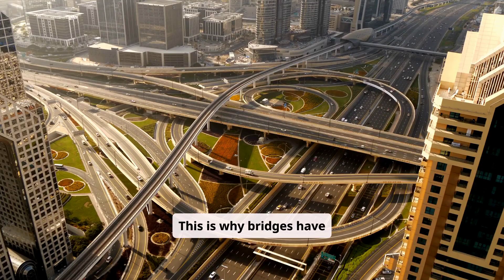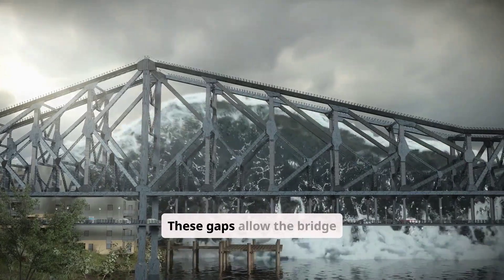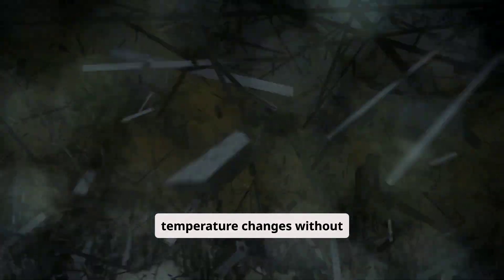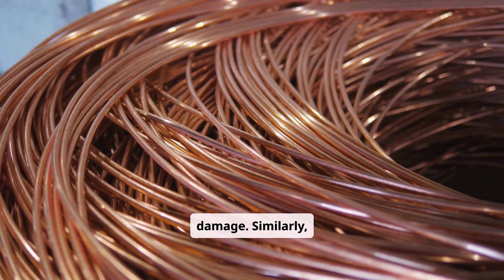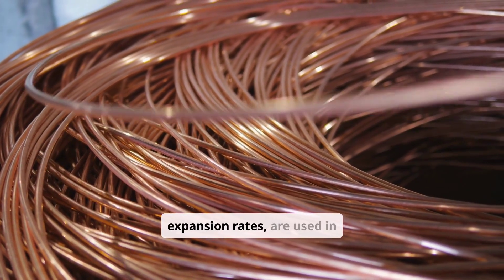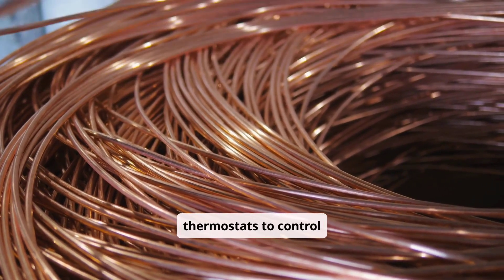This is why bridges have expansion joints. These gaps allow the bridge to expand and contract with temperature changes without causing damage. Similarly, bimetallic strips, made of two different metals with different expansion rates, are used in thermostats to control temperature.